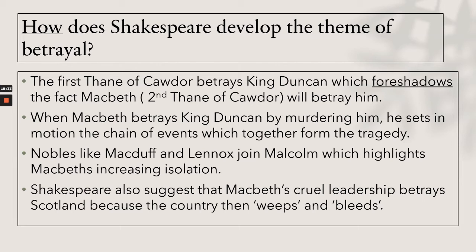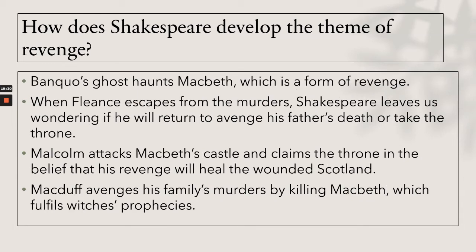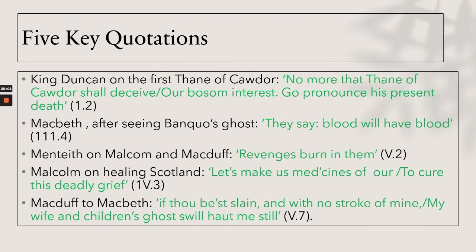When Macbeth betrays King Duncan by murdering him, he sets in motion the chain of events which form the tragedy. Nobles like Macduff and Lennox join Malcolm, highlighting Macbeth's increasing isolation. Shakespeare also suggests that Macbeth's cruel leadership betrays Scotland because the country 'weeps and bleeds.' For revenge: Banquo's ghost haunts Macbeth as a form of revenge. When Fleance escapes, Shakespeare leaves us wondering if he will return to avenge his father's death.